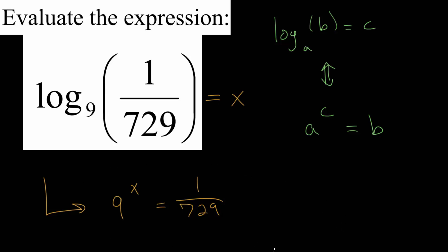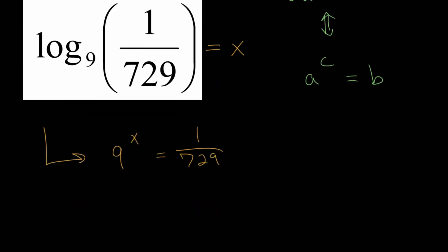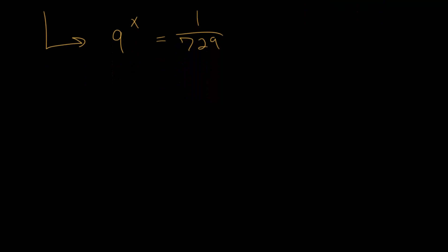Now from here, we can use exponent properties to try to solve for x. With solving exponential equations, one technique that we can use, and that will actually apply here, is to rewrite each side of the equation with the same base. And to do that, we just need to recognize that this 729 is a power of 9.